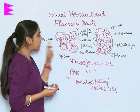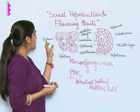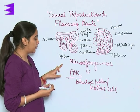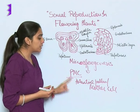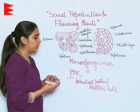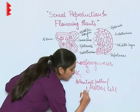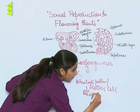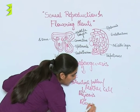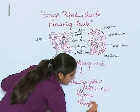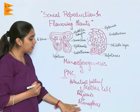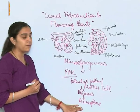Once the sporogenous tissues form microspore tetrads, these microspore tetrads are responsible for the formation of the PMC — the pollen mother cell. This PMC undergoes meiosis and forms microspores, which are further responsible for the formation of pollen grains.